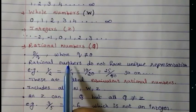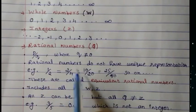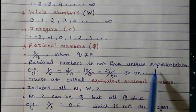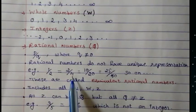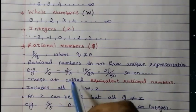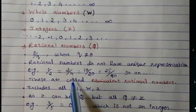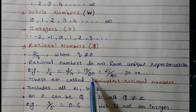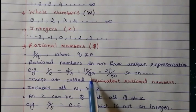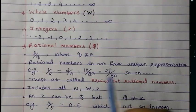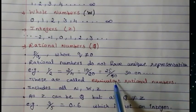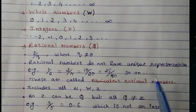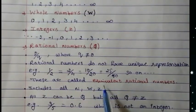Rational numbers don't have any unique representation. For example, 1/2 can also be written as 2/4 — if you divide you get back 1/2. It can also be written as 10/20 — dividing gives the same 1/2. Same way it can also be 25/50, which again gives 1/2. Therefore these numbers are called equivalent rational numbers.